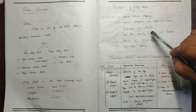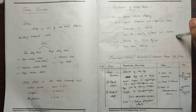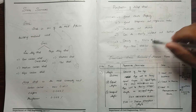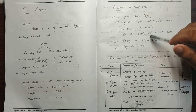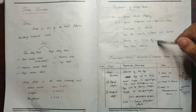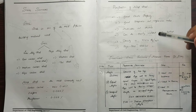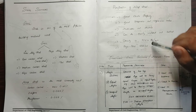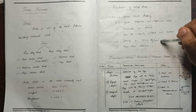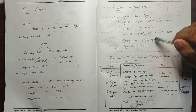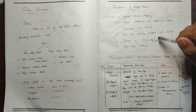Mild steel can be shaped into various forms. It can be easily welded and bolted. Its density is 7854 kg/m³, which is classified as High Dense.